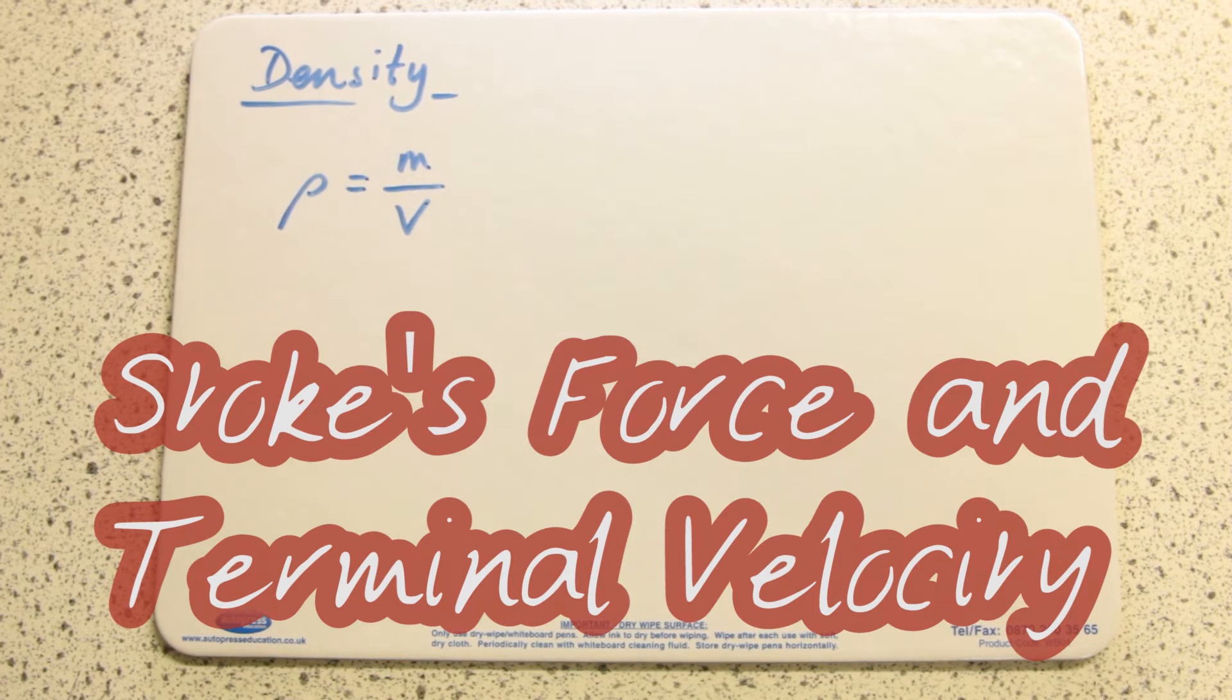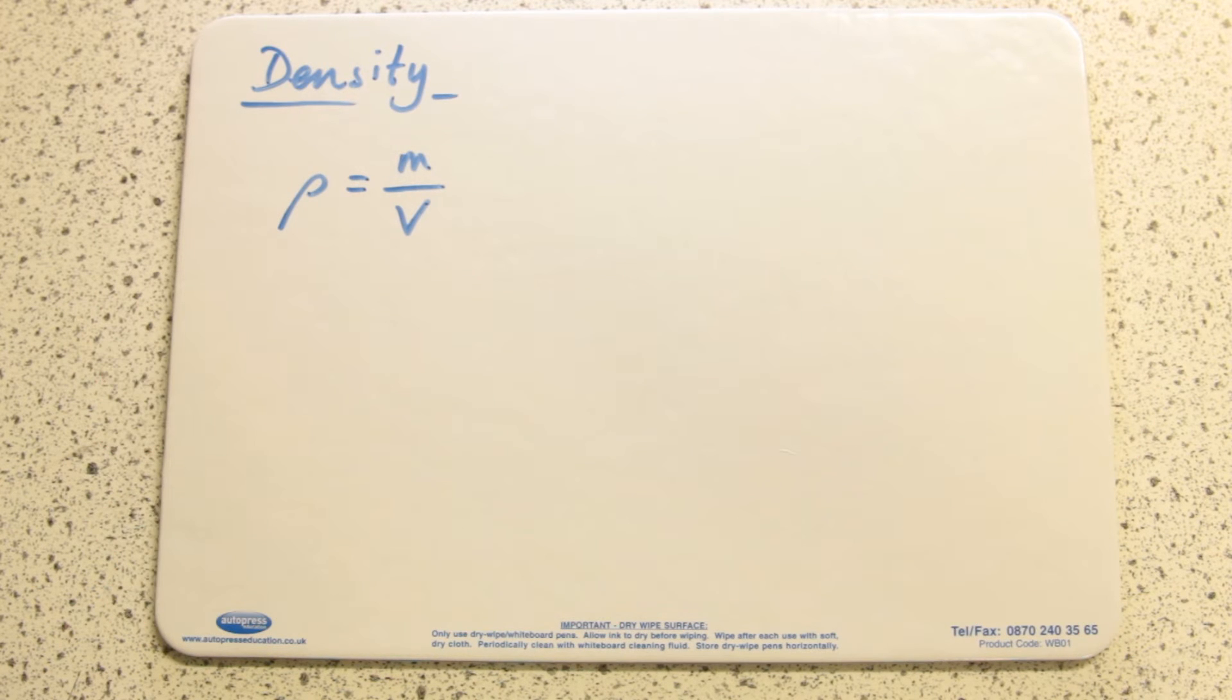You will have come across the idea of density before, maybe just called it heaviness for size at key stage 3, but you need to know the equation for it. Density is mass over volume. That is not a P, that's a rho, so it's ρ = m/V, with capital V for volume.